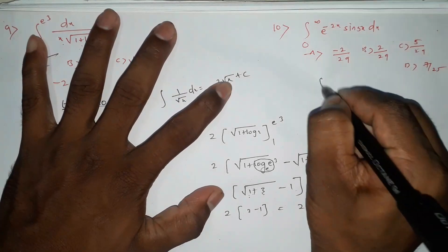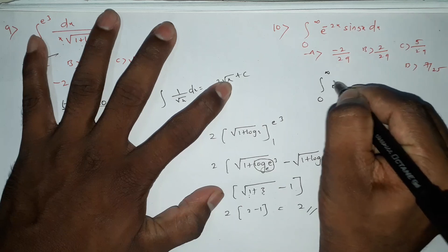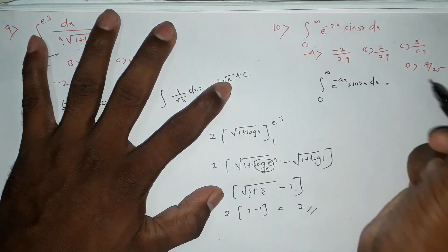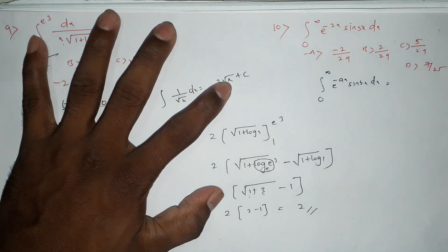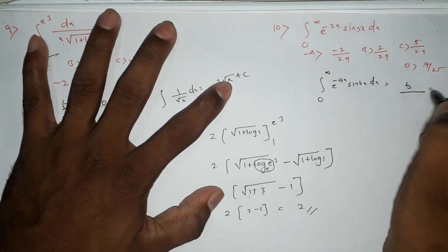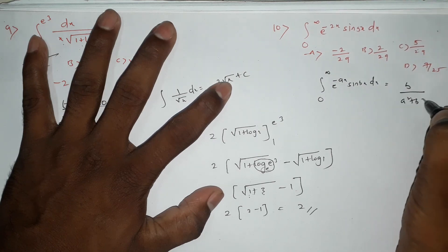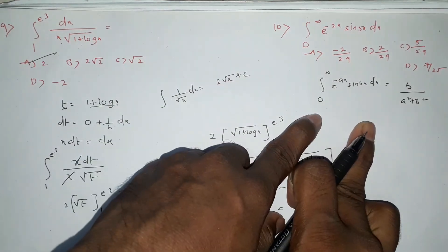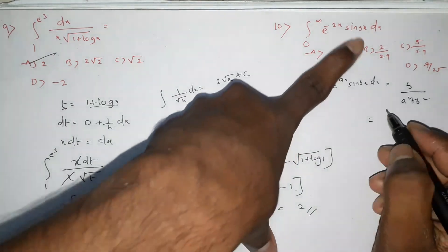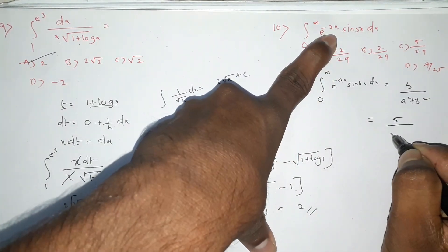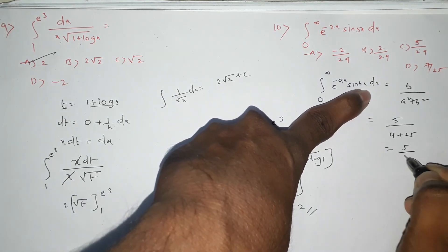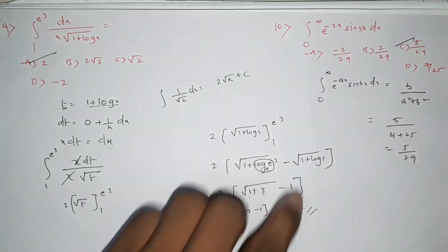Integration of e power minus ax sin bx dx equals b by (a squared plus b squared). Here a equals 2, b equals 5. So answer is 5 by (4 plus 25) equals 5 by 29. Option is the right answer. Simple question.